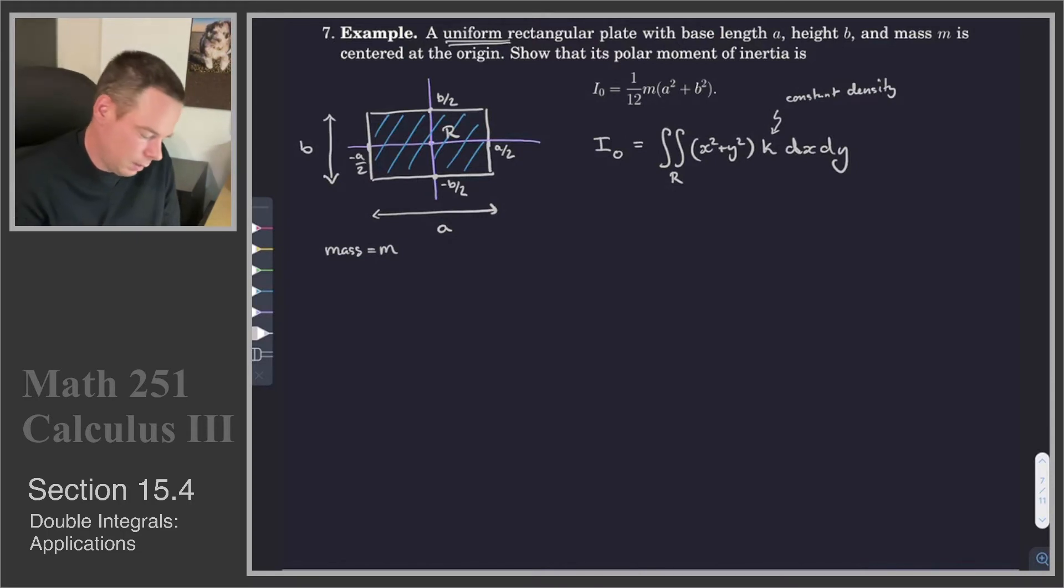We can actually work out what K is if we want. Because we know the mass is M, we know the area is A times B. So we know that A times B, or area, times density is equal to mass.